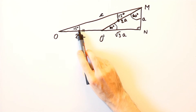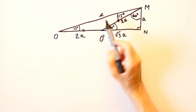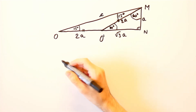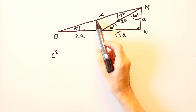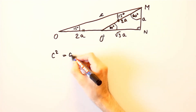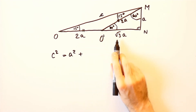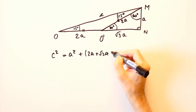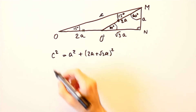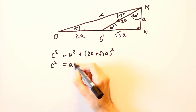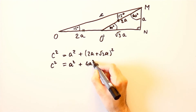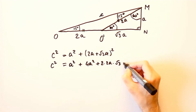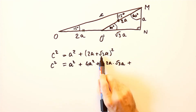The sine of 15 degrees is equal to A over C, and to find it we'll first express C in terms of A. For that, we'll use the Pythagorean theorem. So C squared is equal to A squared plus (2A plus the square root of 3 times A) squared, which expands to A squared plus 4A squared plus 2 times 2A times the square root of 3 times A plus 3A squared.